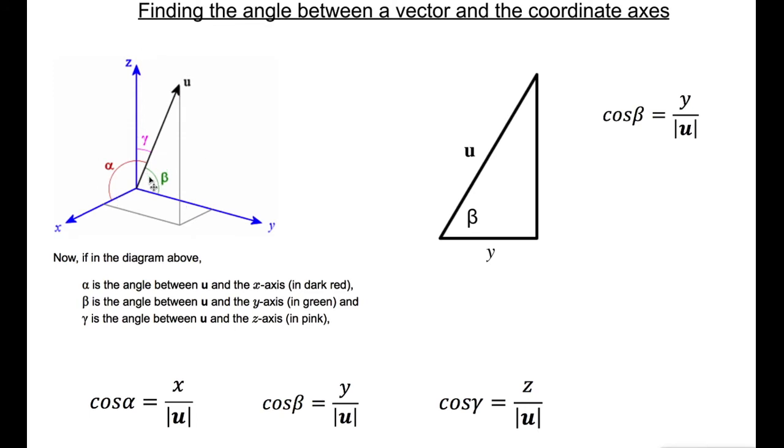The diagram is not bad except they call the angles alpha, beta and gamma, whereas in your textbook they call them theta x, theta y, theta z. So alpha, beta, gamma, that's an alphabetical order, the Greek alphabetical order there.